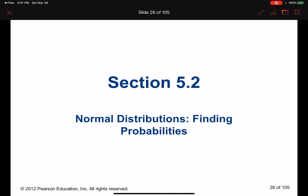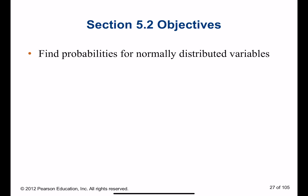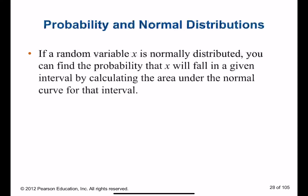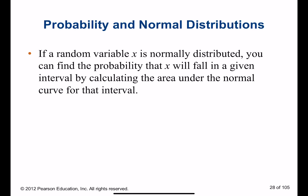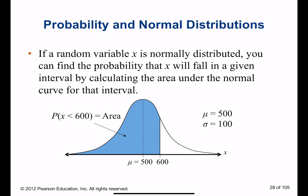We are going to continue section 5.2, finding probabilities, because that's exactly what we were doing — working with tables. We're going to find probabilities for normally distributed values and learn how to find the z-score based on a given probability.